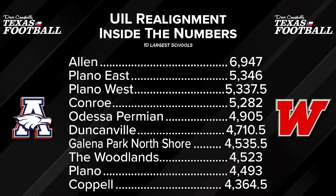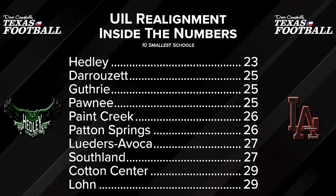Now let's look at the 10 smallest schools that will be playing UIL football in 2024. The Headley Owls are the smallest school playing football with an enrollment of 23 — that's boys and girls combined in the entire high school. To be clear, the smallest school in the UIL overall is Valentine, with an enrollment of six. But Headley, at 23, is the smallest that is actually a football school.